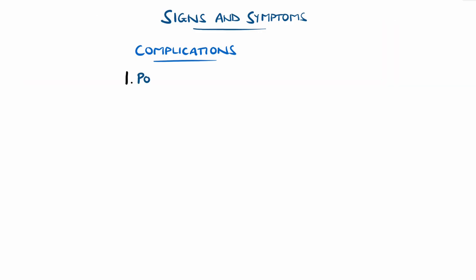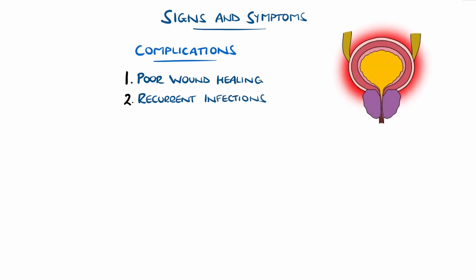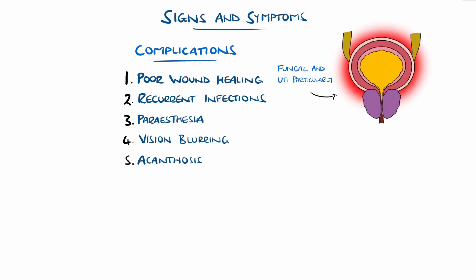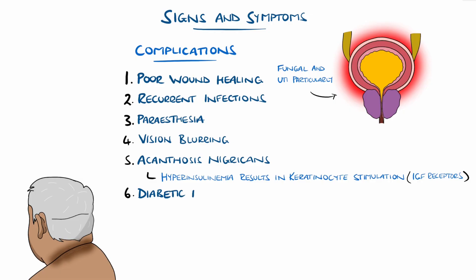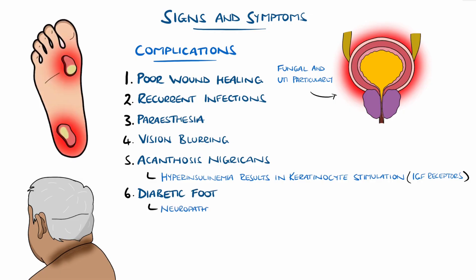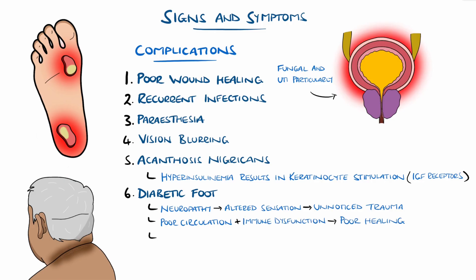As a result, common findings can include wounds such as cuts and grazes that heal poorly, recurrent infections, particularly fungal and urinary tract infections. There may also be neuropathic signs like tingling or numbness in the hands or feet, blurring of vision, and acanthosis nigricans — the development of darkened patches of skin, typically around the neck or armpits, as a result of hyperinsulinemia leading to keratinocyte stimulation. Diabetic foot is another complication, characterised by infection, ulceration, or destruction of tissues of the foot associated with neurological and vascular compromise. Loss of sensation due to neuropathy can lead to unnoticed trauma, while poor circulation and immune dysfunction impair healing, overall increasing the risk of serious infections, gangrene, and in severe cases, amputation.